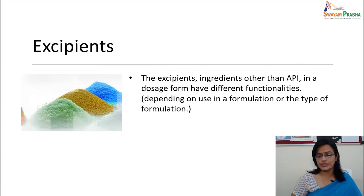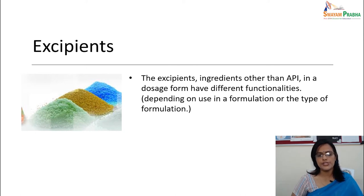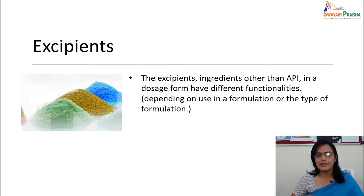So dear students, what are excipients? Excipients are the ingredients other than the active pharmaceutical ingredient — we also call it API, active pharmaceutical ingredients. They have different functions depending on how they are used in the formulation or the type of formulations they are incorporated into. Pharmaceutical excipients and excipients — both terminologies are the same. But API is a little different: API has got the therapeutic effect which is actually responsible for the purpose it is used for.